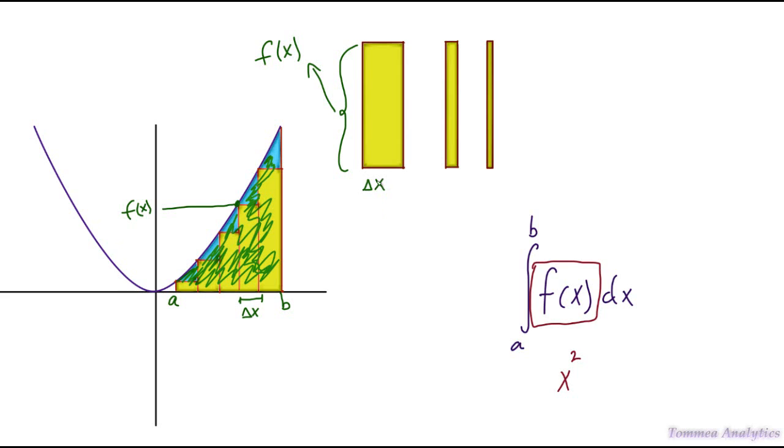So what we have to do is shrink the rectangles. We need to shrink the widths infinitesimally small. So by that, we're talking widths that are so small it'll look something like this, and it gets even smaller than that.